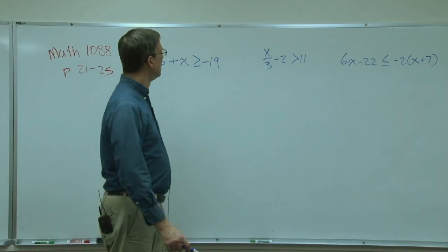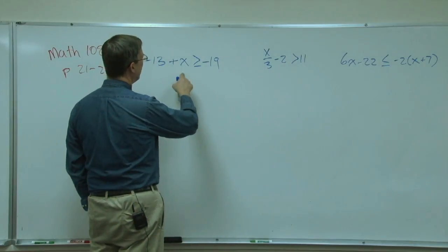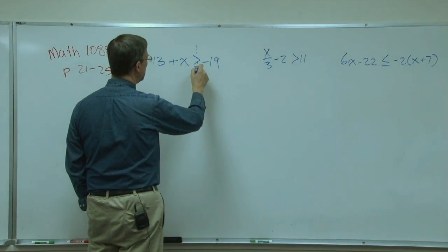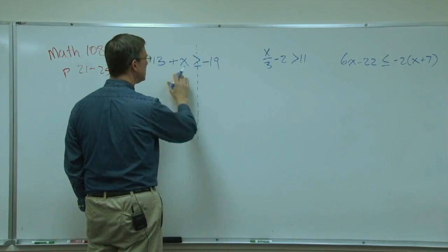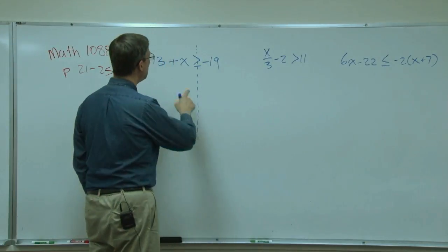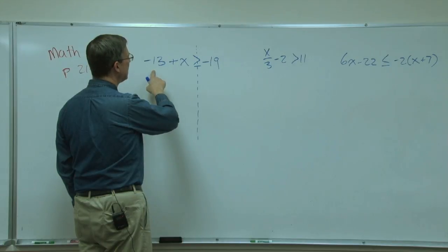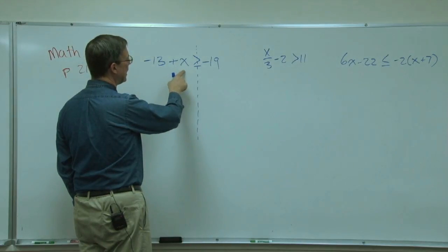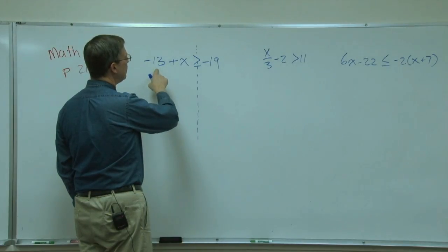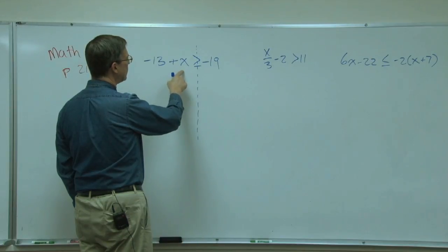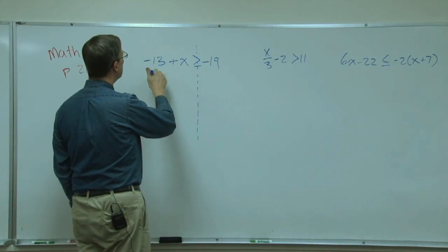First off, we're solving for x. I'm going to draw a line down through this because we still have to keep both sides balanced. I have negative 13 plus x, so I want to get rid of this and isolate x. Always keep the variable on the left, so I'm going to add 13 here, add 13 here.